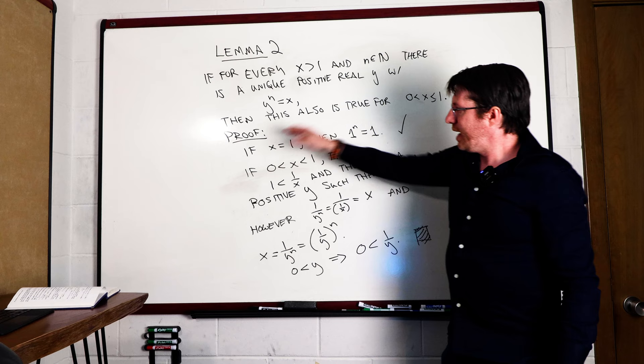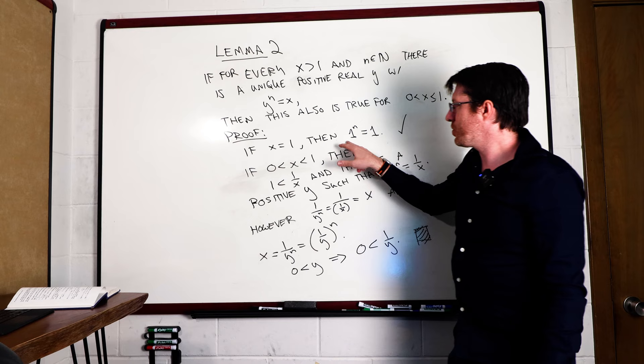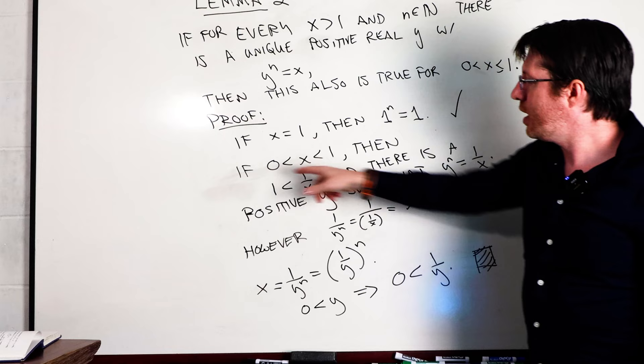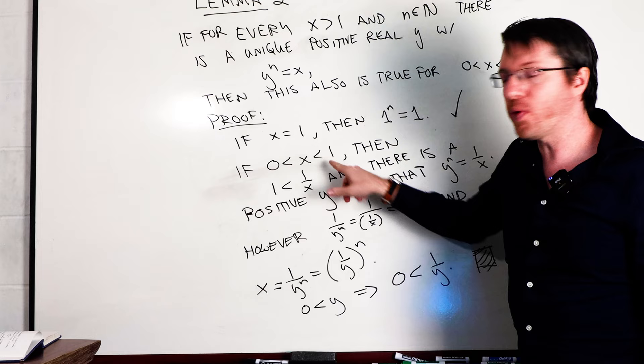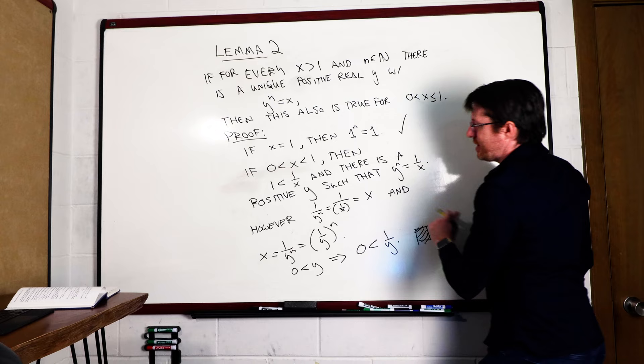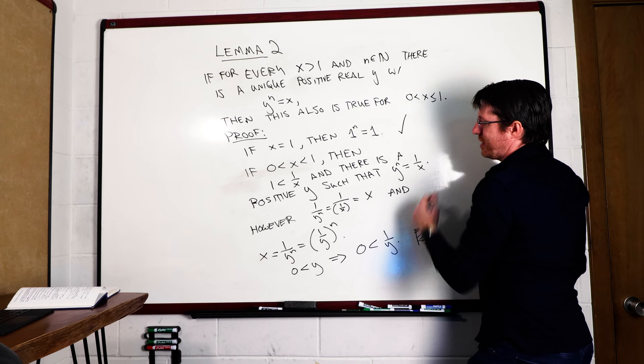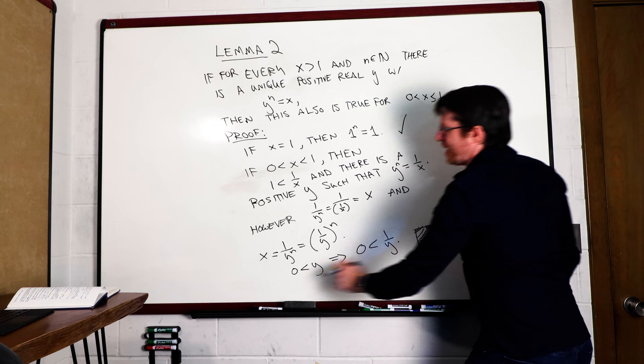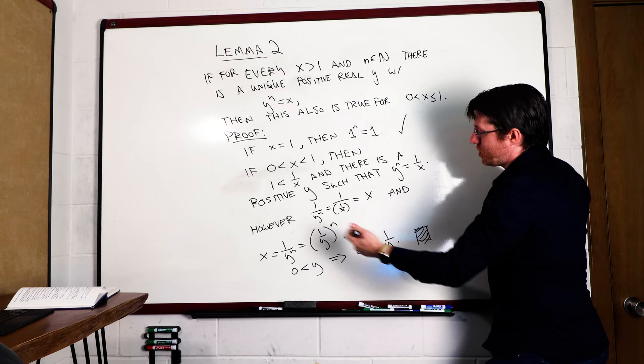If for every x bigger than 1 and n in N there is a unique positive real y with y to the n is equal to x, then this also is true for 0 is less than x is less than or equal to 1. And so the proof I did this is really simple. It's basically I say that if x is equal to 1 then we know that 1 to the n is equal to 1. That's trivial. If 0 is less than x is less than 1 then basically what we know is that 1 over x has to be bigger than 1 and then there's a positive y such that y to the n is equal to 1 over x which is the hypothesis. Then basically I just flip this on its head. So I get 1 over y to the n is equal to 1 over 1 over x which is equal to x and then basically you get x is equal to 1 over y to the n which can be written as 1 over y raised to the n. So then that is the nth root. Is it positive? Yes, because if y is positive then 1 over y is positive and done, right?